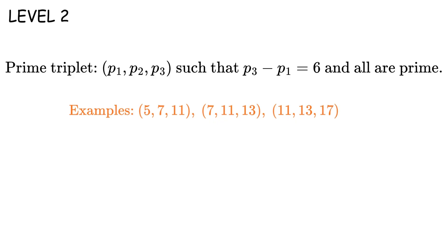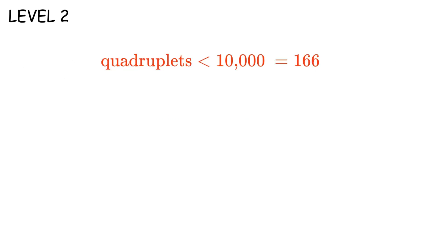Using this rule, we can find prime quadruplets too. These are 4 primes of the form p, p plus 2, p plus 6, and p plus 8. Then 101, 103, 107, 109. Then 191, 193, 197, 199. These are way rarer. There are only 166 prime quadruplets less than 10,000. And only 38 less than 1,000.